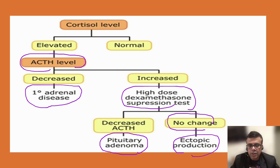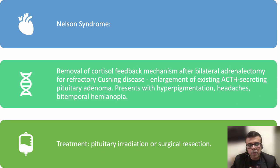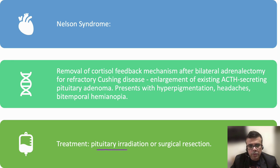For treatment of tumor-related Cushing syndrome, surgical excision is the primary approach. For pituitary tumors, pituitary radiation can also be performed as part of management in addition to surgical excision.